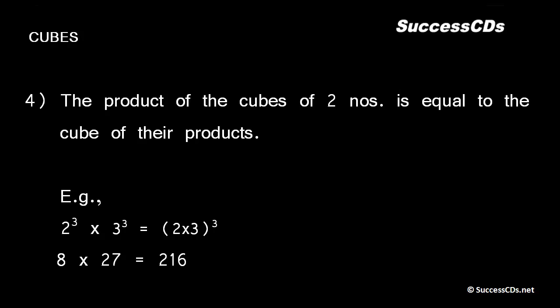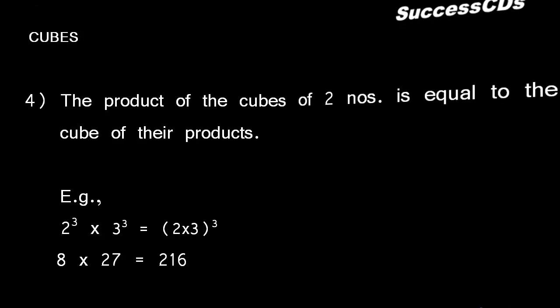Next, the product of the cubes of two numbers is always equal to the cube of their product. For example, 2 cube into 3 cube equals 2 into 3 whole cube. 2 cube is 8 and 3 cube is 27. When we multiply 8 into 27, we get 216. Similarly, if we multiply 2 into 3, we get 6, and 6 cube is 216. So both ways we get 216. Hence, 2 cube into 3 cube can be written as 2 into 3 whole cube.